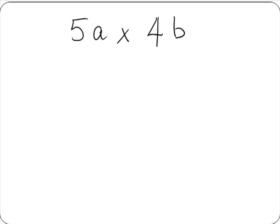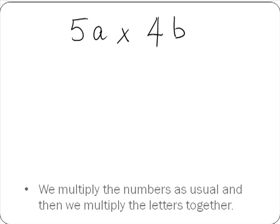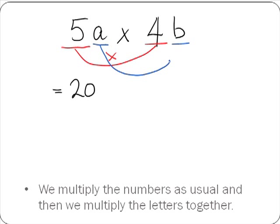Our second example is 5a multiplied by 4b. In this case we have two numbers and two letters. What we do is multiply the numbers as usual and then multiply the letters together. Our numbers are 5 and 4, so 5 by 4 gives us 20. Then we multiply our letters: a by b gives us ab. So 5a multiplied by 4b gives us 20ab.